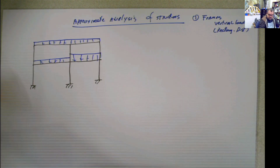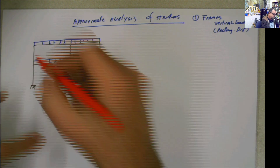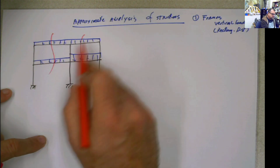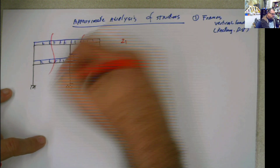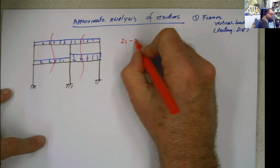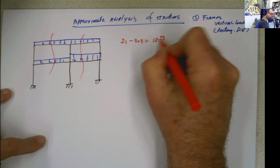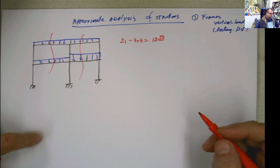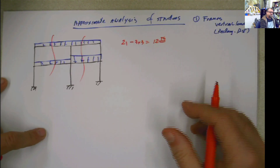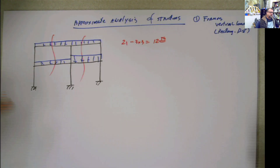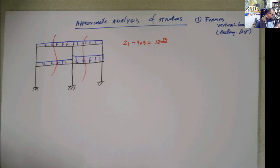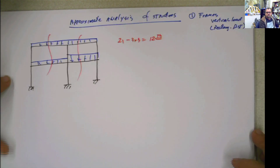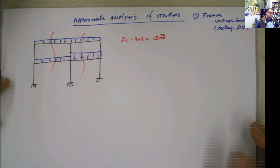This structure is statically indeterminate. What is the degree of indeterminacy? If we make cuts, we get 21 unknowns, and with 3 bodies times 3 equations, we get a 12th degree of indeterminacy. Just imagine doing this using the virtual work method — we would have to find 12 redundants and apply the procedure 12 times, probably taking us 12 lifetimes. But we can use an approximate method to find something really close that we can work with.